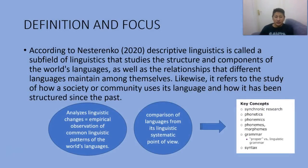Definition. Descriptive linguistics is a subfield of linguistics that studies the structure and the components of the world's languages, as well as the relationship that different languages maintain among themselves. Likewise, it refers to the study of how the society or community uses its language and how it has been structured since the past.